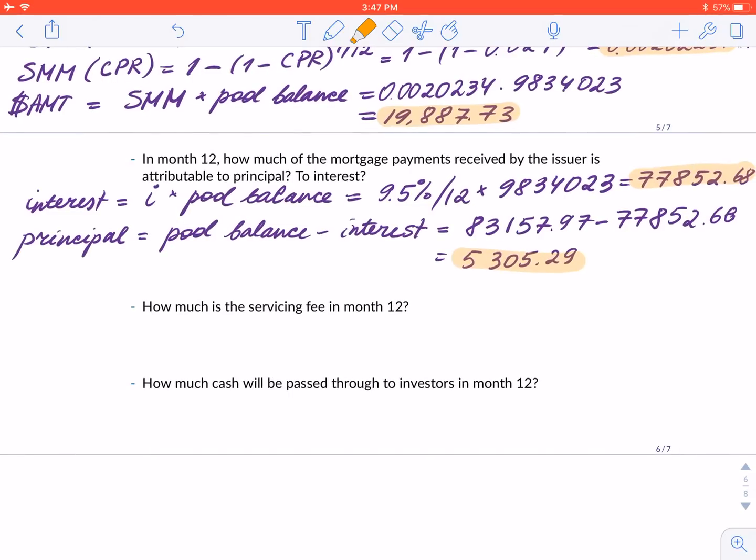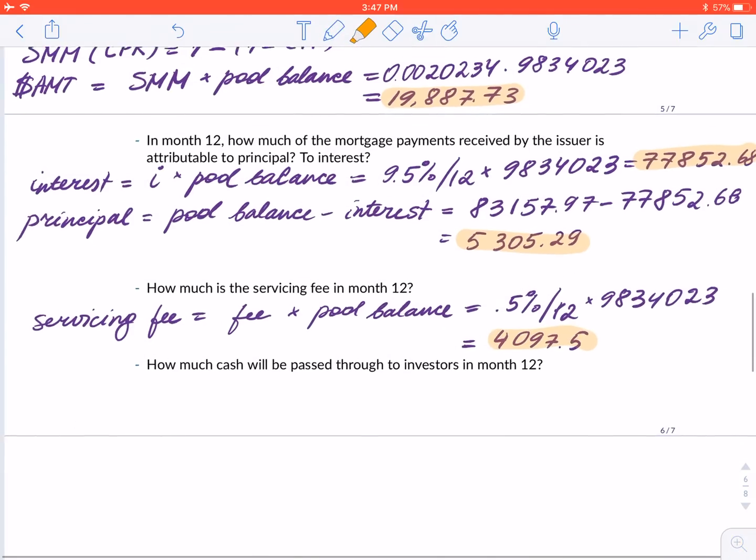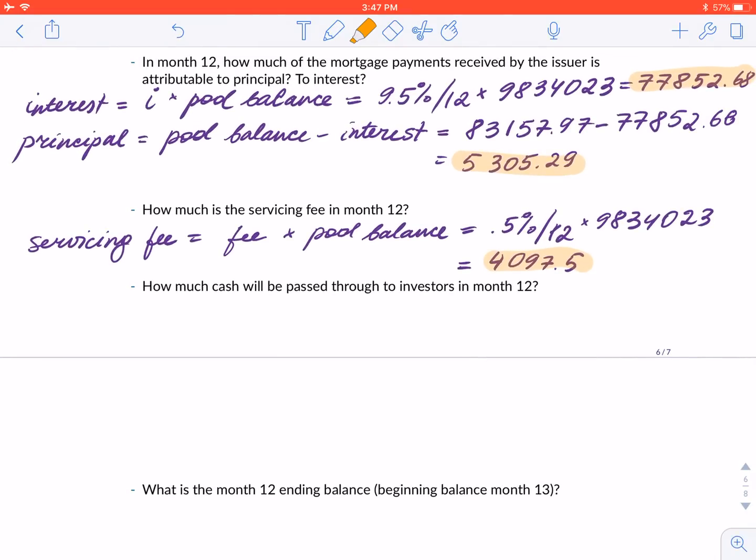How much is the servicing fee in month 12? Servicing fee is the fee times the pool balance. The fee is 0.5% annually, so we divide by 12 and multiply by $9,834,023. That equals $4,097.50.